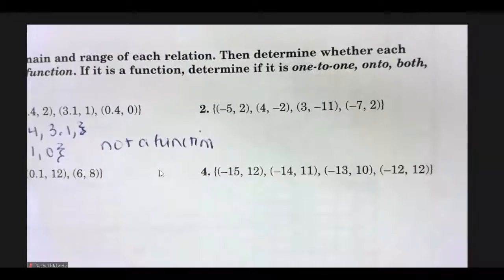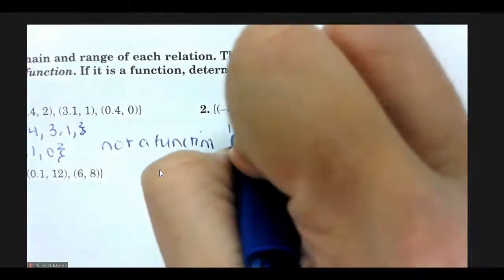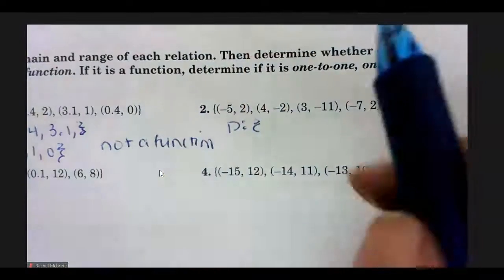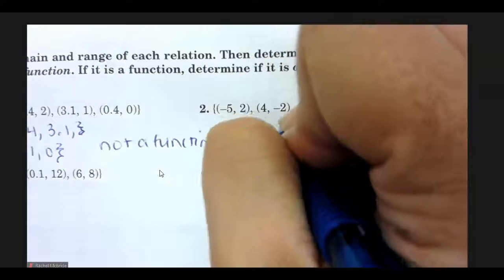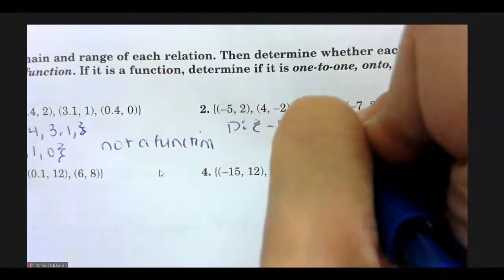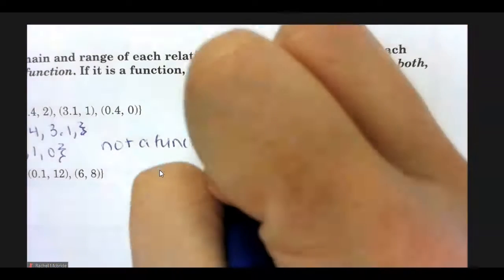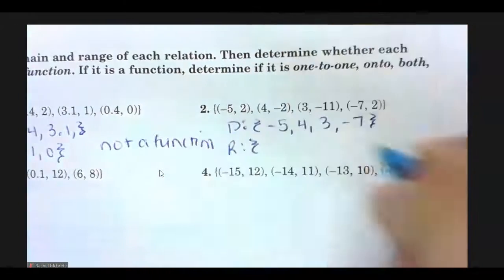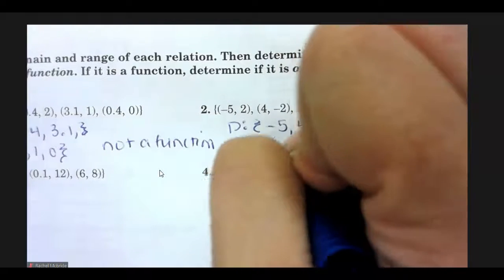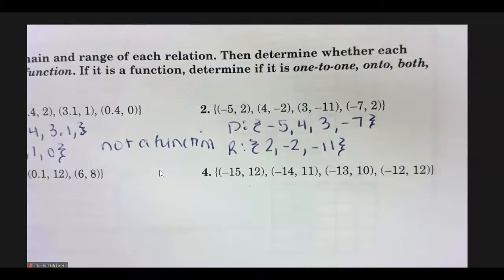Number two. My domain is negative 5, 4, 3, and negative 7. My range is 2, negative 2, and negative 11.